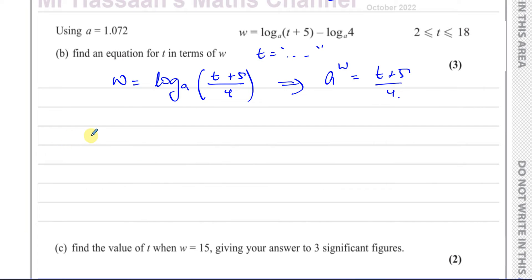Okay. So therefore, we can say to find t, you're going to multiply by 4. So 4a to the power of w minus 5 is equal to t. So we have the equation t equals 4a to the power of w minus 5. That's the equation that we need. That's part b.